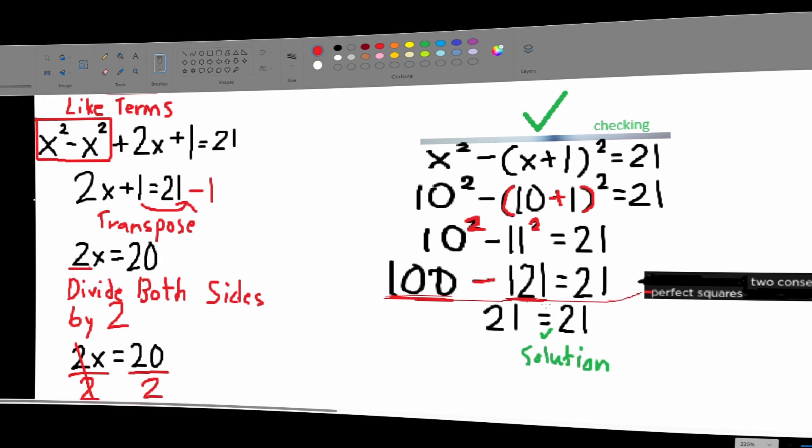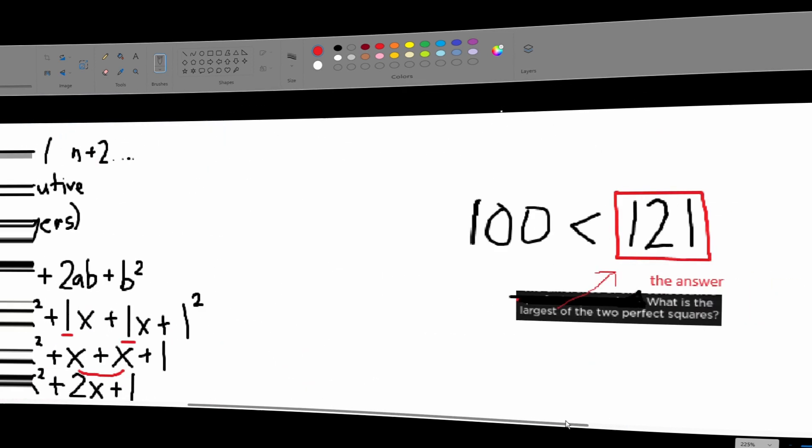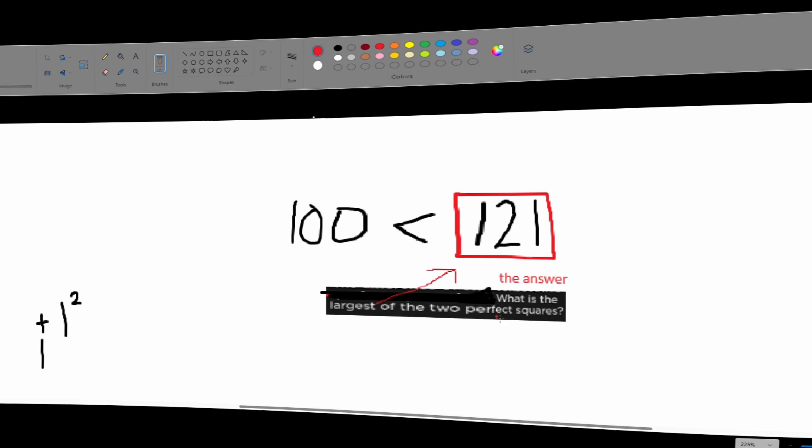So, now if we go here. Now it's just simple. What is the largest of the 2 perfect squares? It's 121. That's the answer.